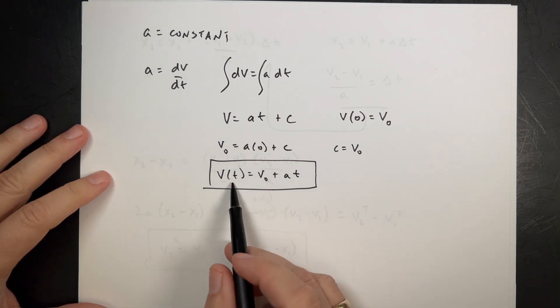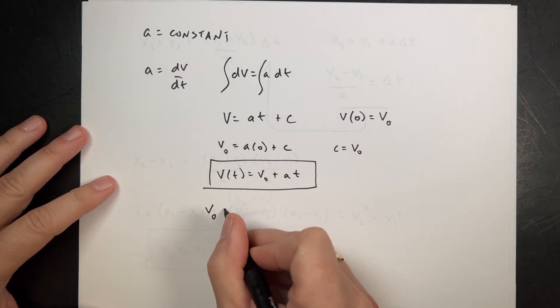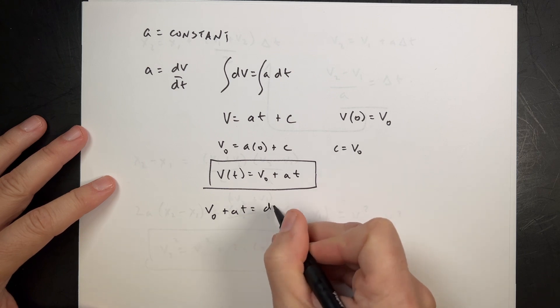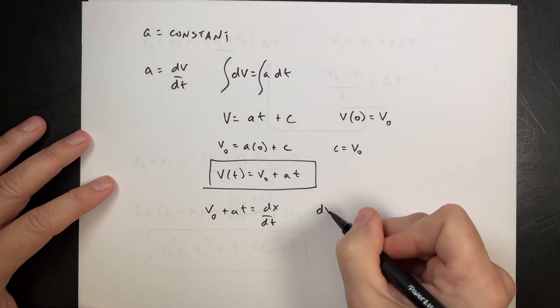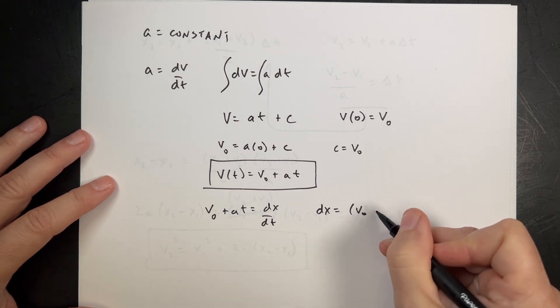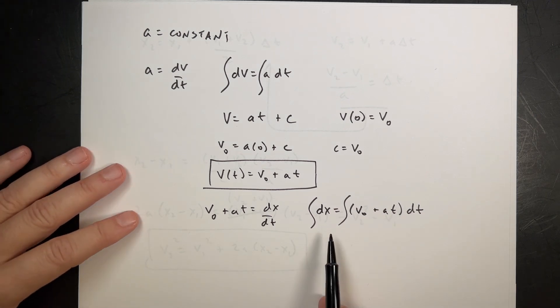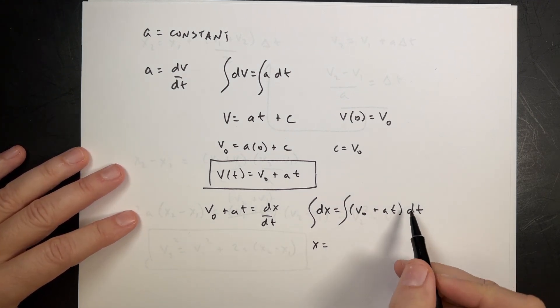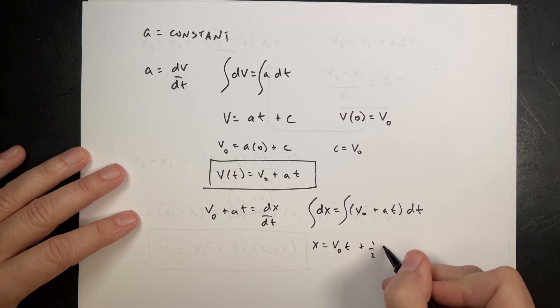Now, I can use this as the definition of velocity as the derivative of the position with respect to time. So I can say v0 plus a t equals dx/dt. And again, I can multiply by dt. I get dx equals v0 plus a t dt. And again, integrate both sides. If I integrate this side, I get x. And if I integrate this side, I have v0 dt, so it's v0 t. And then I have plus a t dt, which is 1/2 a t squared. And then I have another constant. I'll call that k.